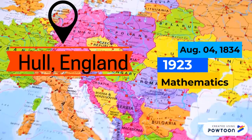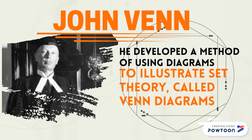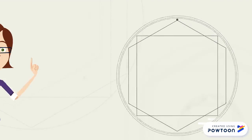John Venn developed a method of using diagrams to illustrate set theory, called the Venn Diagram. He also wrote The Logic of Chance in 1886, an original book conducive to the development of the theory of statistics.